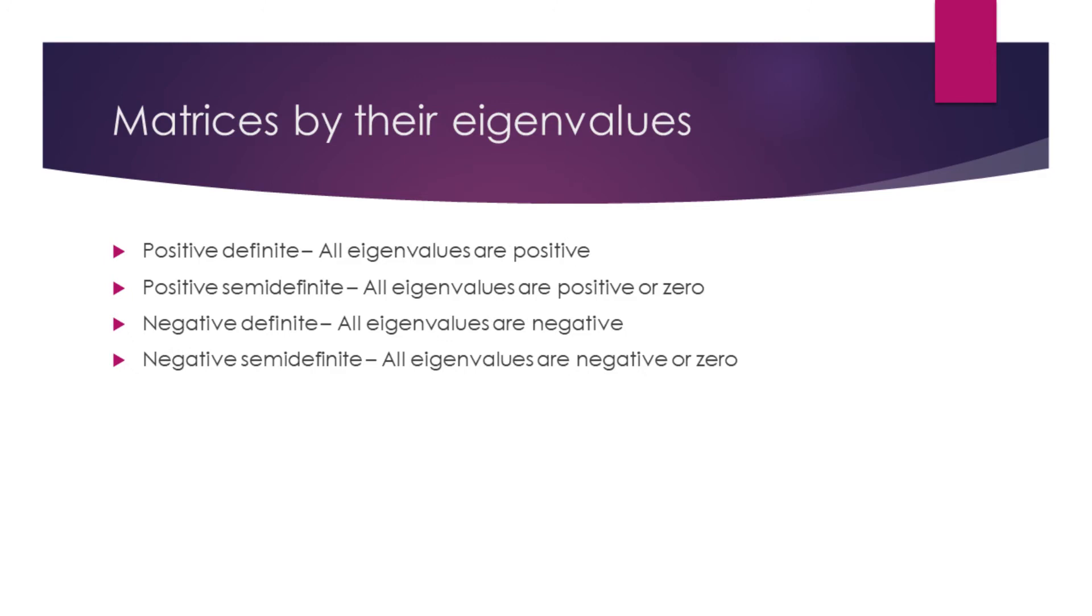We have 4 types of matrices that have eigendecomposition. They are called positive definite if all eigenvalues are positive, positive semi-definite if all eigenvalues are positive or 0, negative definite if all eigenvalues are negative, and negative semi-definite if all eigenvalues are negative or 0.